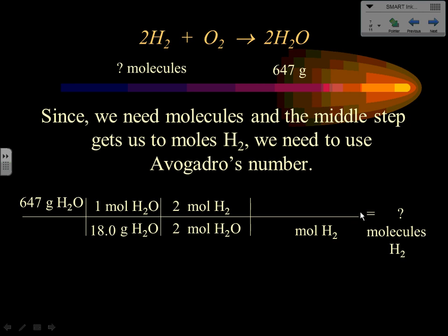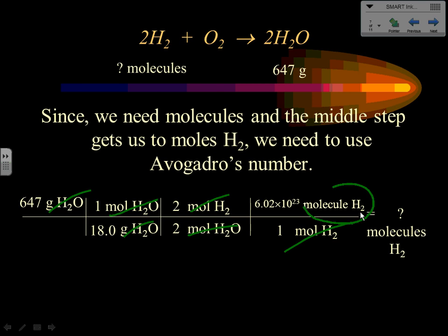We don't want moles of hydrogen at the end, so they go on the bottom of step three to cancel; molecules of hydrogen go on top. At this point every unit has been canceled: grams of water cancel, moles of water cancel, moles of hydrogen cancel, and we're left with molecules of hydrogen — exactly what we need. All three steps are set up and the solution is complete.